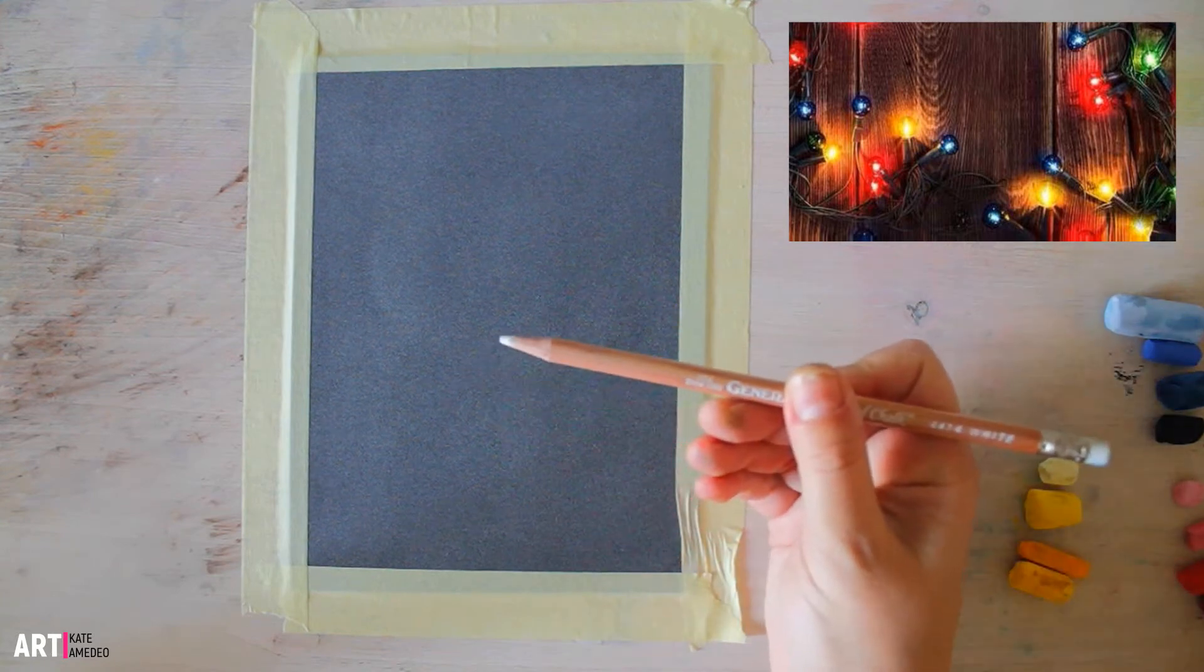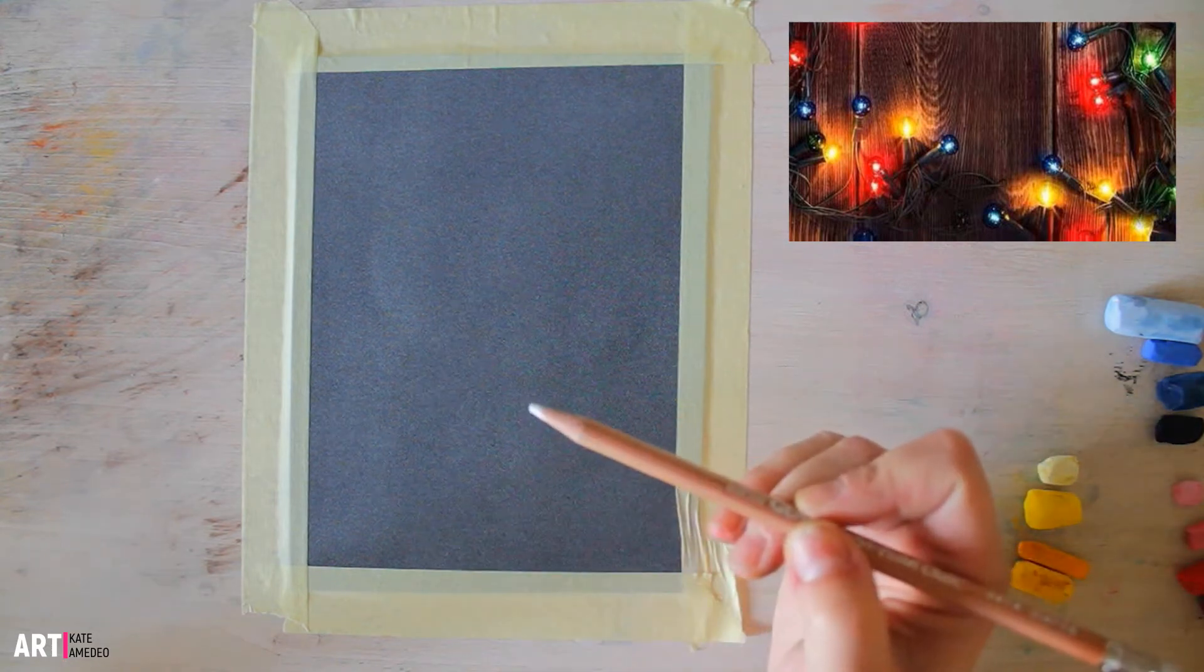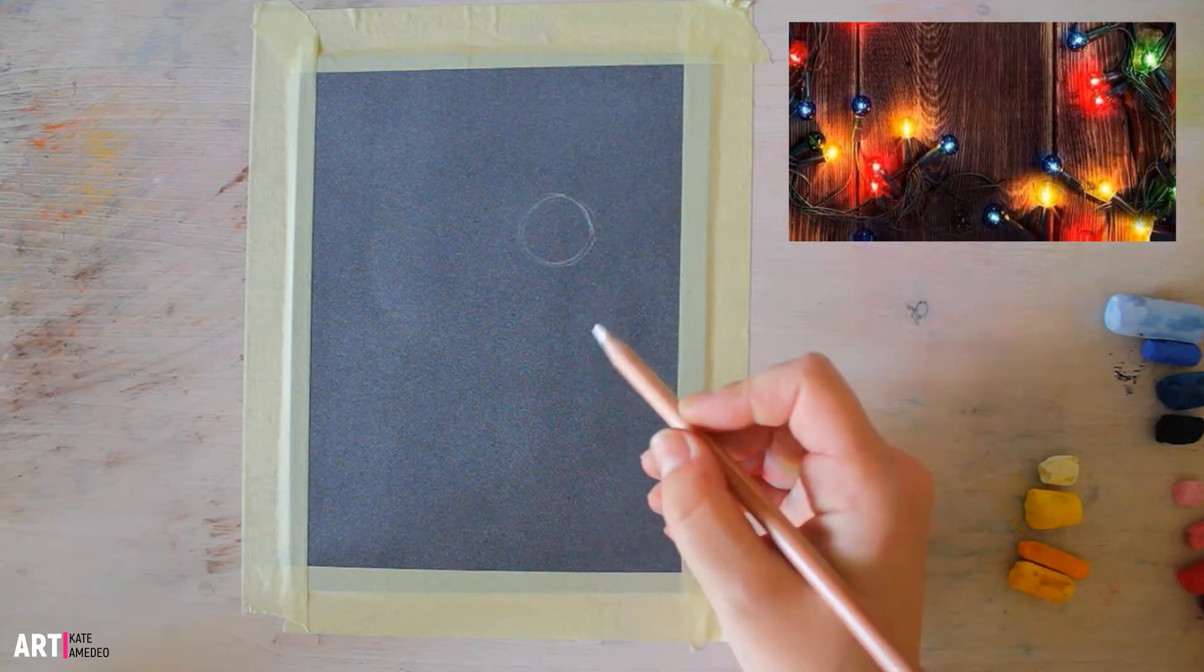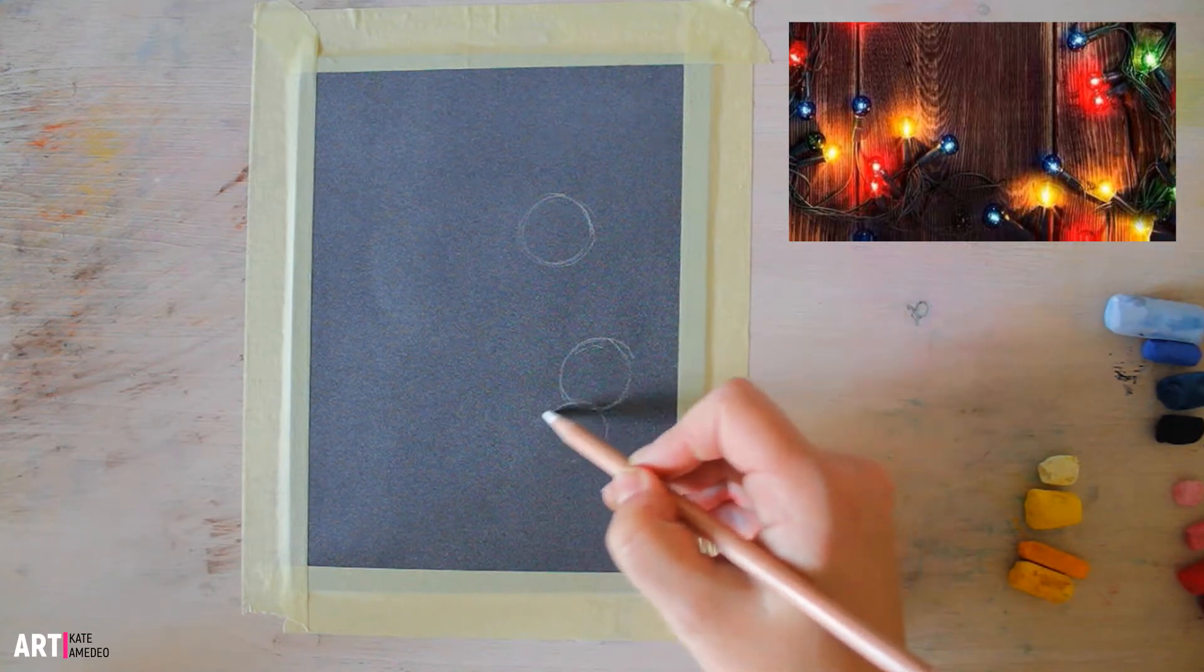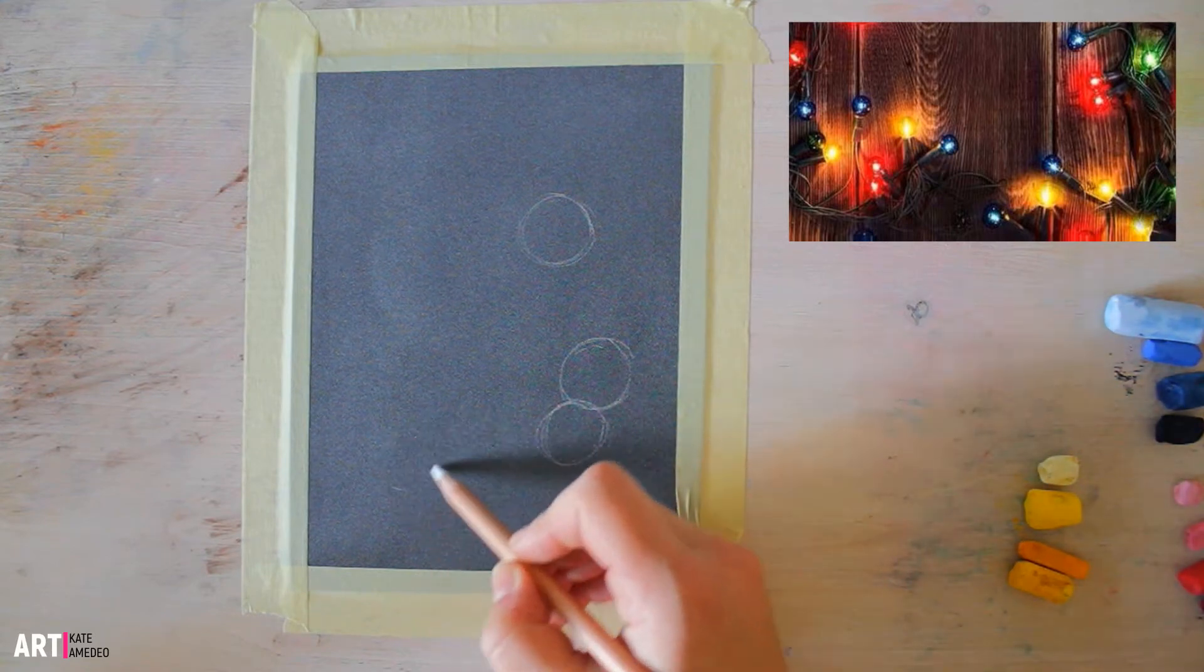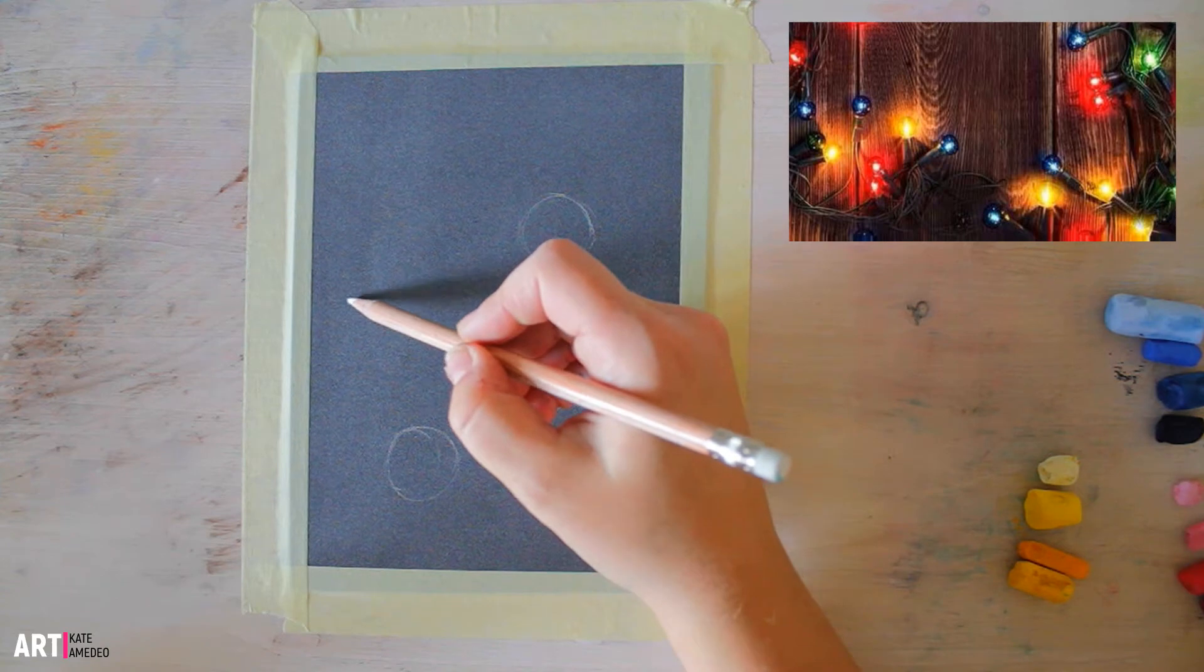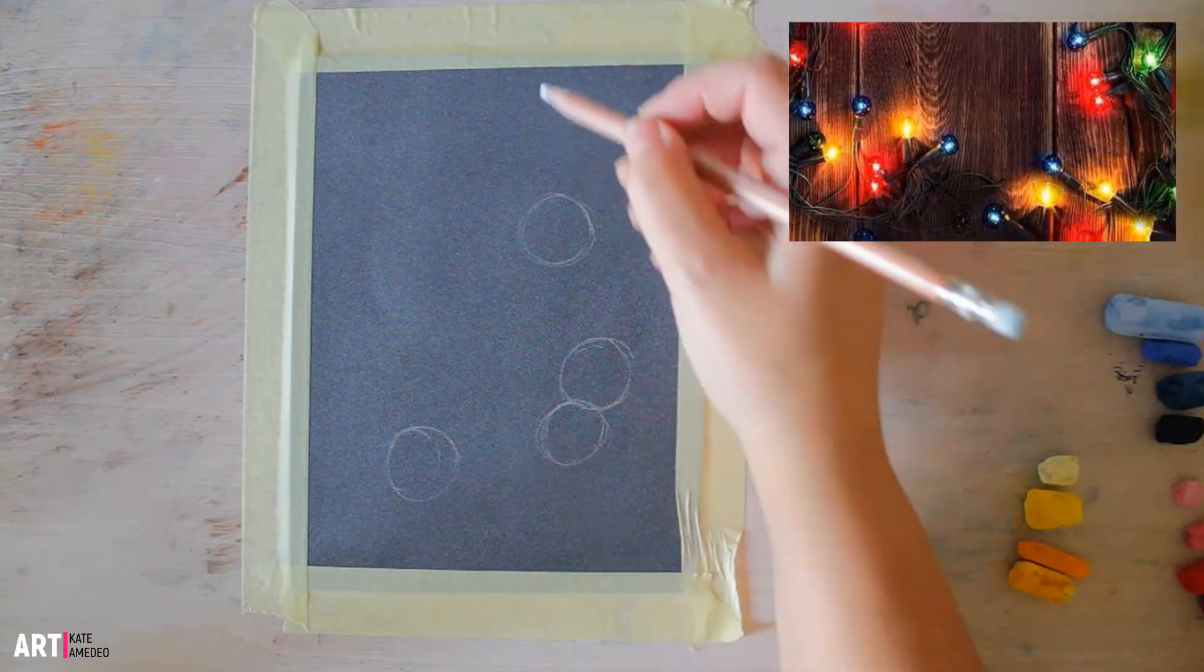With the white pastel pencil, or you can use a charcoal pencil which will do perfectly fine, I will start and add my composition. I'm just looking at where I want my lights located. I really like the idea of two lights close by, one close to the other. Here basically what I'm doing is looking at my lights and placing them in a composition on my page which is going to make it look more interesting.